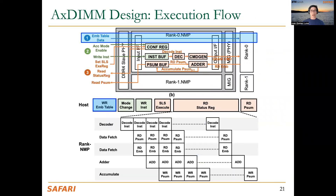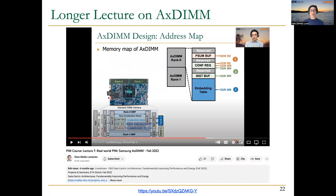Here you can see the execution flow: first the embedding tables are loaded into memory, then the host changes the rank by changing a configuration register. At that point, the near-memory processing accelerators start executing the SLS operator — reading from the embedding tables and computing the gather-and-reduce operation, accumulating results in the PSUN SRAM-based buffer. A link to the full AXDIMM lecture is provided.